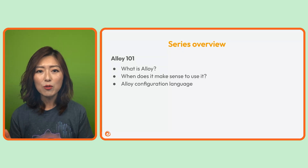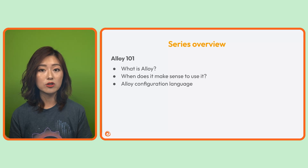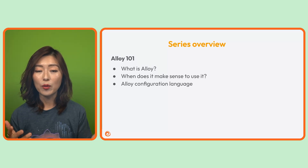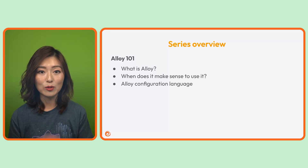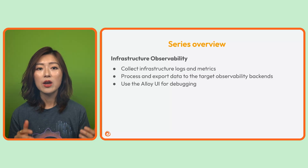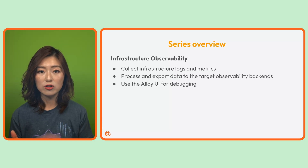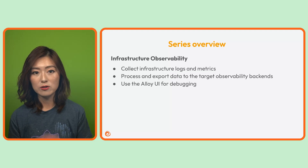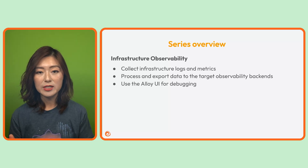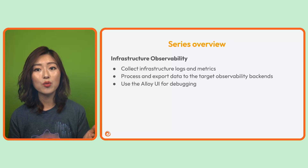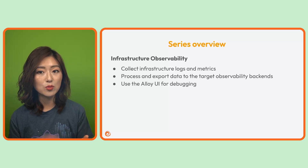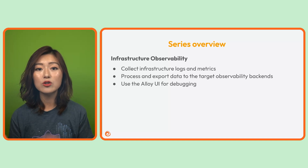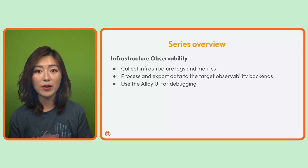Alloy isn't just for one thing — it's great for both infrastructure and application observability. For infrastructure observability, we'll use Alloy to collect logs and metrics from our infrastructure. Once we have the data, we'll configure Alloy to process and export it to target observability backends. Then we'll use the Alloy UI to verify the pipeline is running smoothly end-to-end.